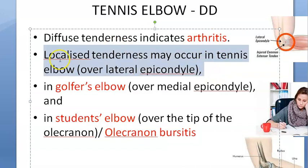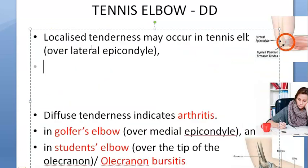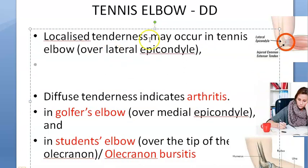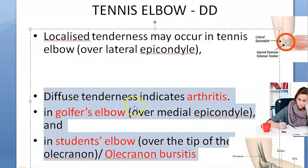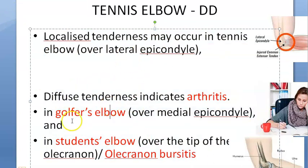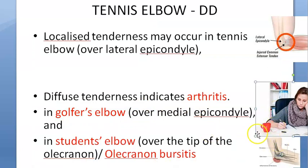To summarize the differentials: local tenderness over the lateral epicondyle is tennis elbow; diffuse tenderness suggests arthritis; tenderness over the medial epicondyle is golfer's elbow; and tenderness over the olecranon process is olecranon bursitis or student's elbow.